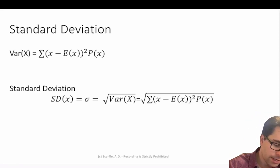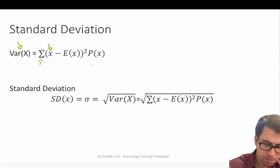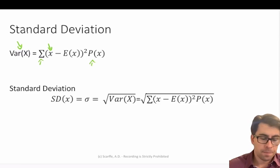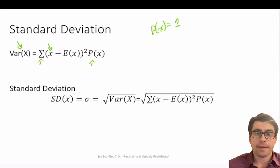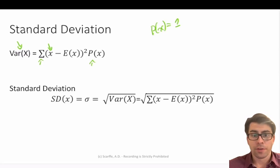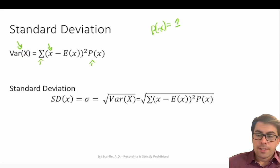The variance of X is equal to the sum of the observed value of X minus the expected value of X, squared, times the probability that that event X occurs. Importantly, if you were to sum up all the probabilities of X in this equation, you should get a sum of one — that's for the probabilities only. I'll show you that in a worked example in a second.